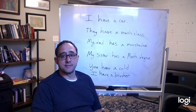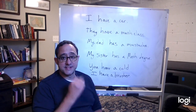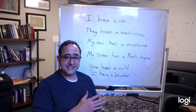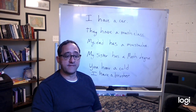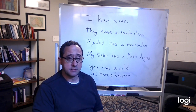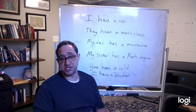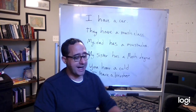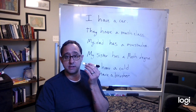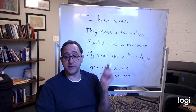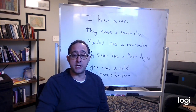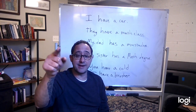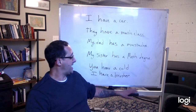Hello everyone. Welcome to our fourth installment of Present Simple Tense in English. Today we're going to cover the verb 'to have,' which means to have possession of something. I have this pen and I will write with it. I have a computer that I'm talking to you on and I have a camera that is taking video of me.